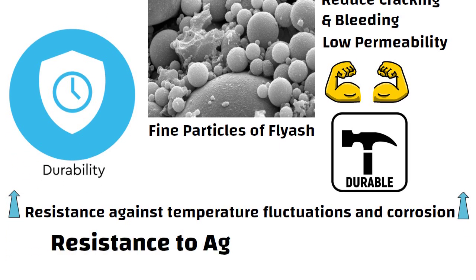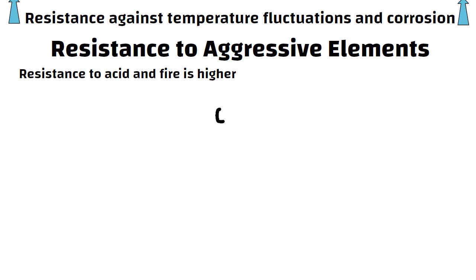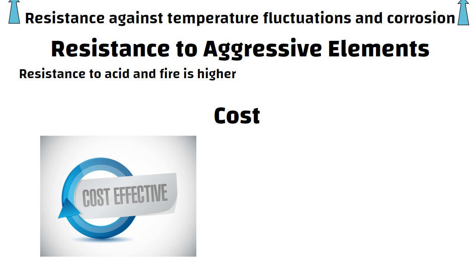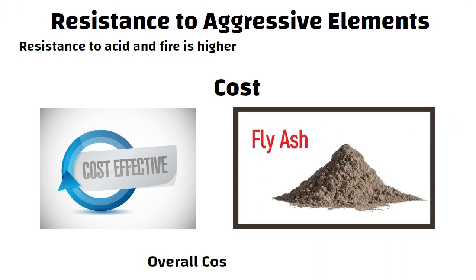Fly ash increases the resistance of ashcrete against temperature fluctuations and corrosion. Resistance to aggressive elements: The resistance of ashcrete to acid and fire is higher than traditional concrete. Cost: Ashcrete is a cost-effective material because it is mainly produced from fly ash, hence the overall cost is less than conventional concrete.